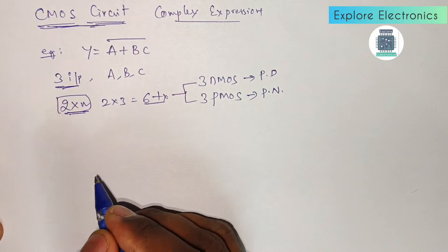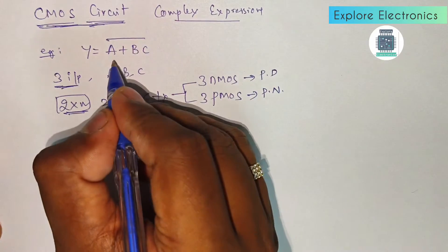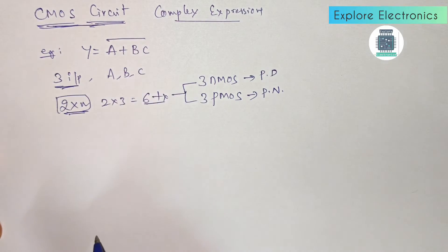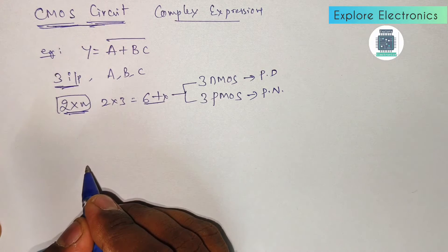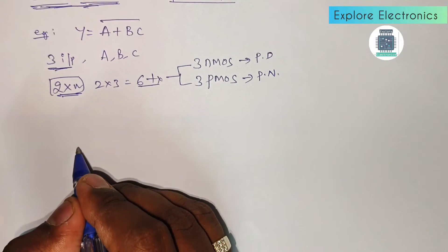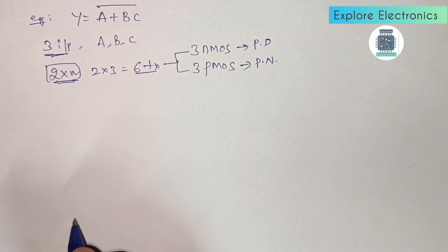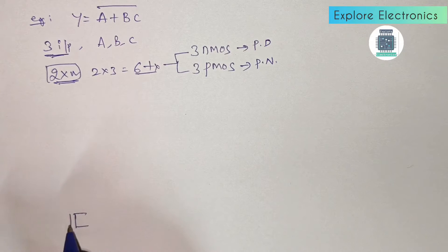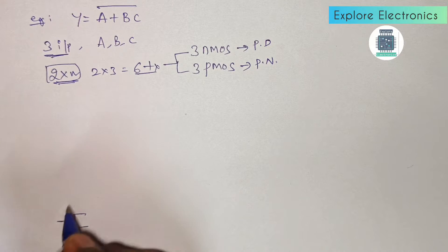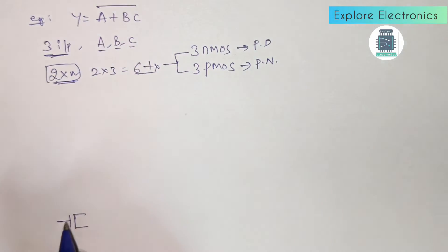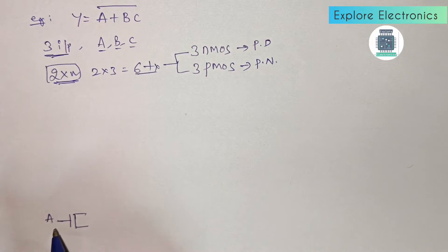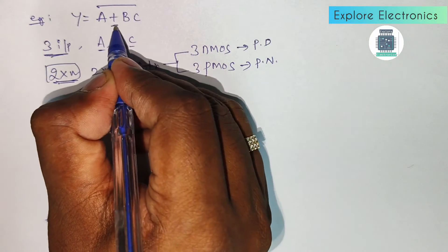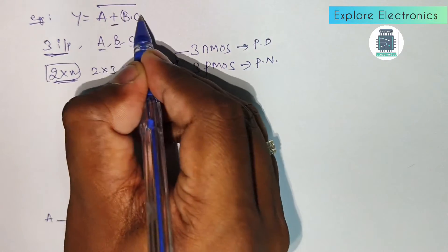The three NMOS transistors are required in the pull-down network and the three PMOS transistors are required in the pull-up network. Let us write the circuit now. We have a + bc, so first I am going to write the pull-down network. In the pull-down I am writing one N transistor and we need to provide the gate input — let it be a.